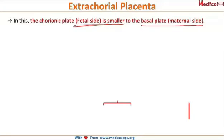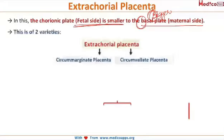To remember this: the basal plate is bigger — B, B. Since the fetal side is smaller, it is surrounded on all sides by the maternal side. This surrounding can be of two types, and accordingly extra chorial placenta is also of two types: circummarginate and circumvallate.